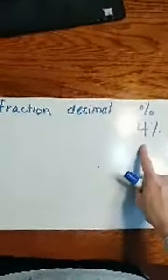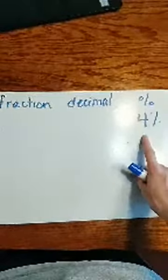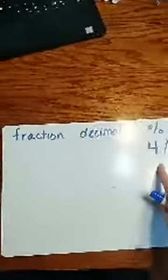On my first one I gave us 4%. So if I have 4%, I need to figure out how to write that as a fraction and a decimal. I always like to do the fraction first from that.